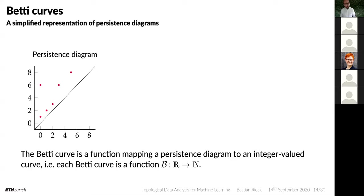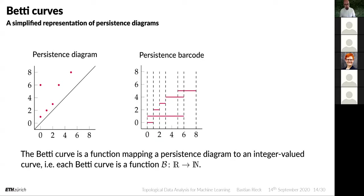One that I like very much is called the Betti curve — a simplified representation of a persistence diagram. Instead of a complex kernel mapping, it uses a function mapping from the persistence diagram to an integer-valued curve. You take the persistence diagram and draw it as a persistence barcode: every point becomes a line running from some arbitrary Y position between its two X positions. A feature created at, say, zero and one becomes a line going from zero to one.